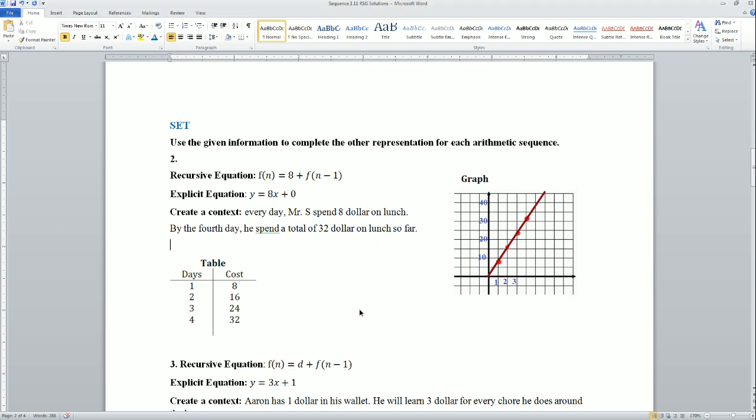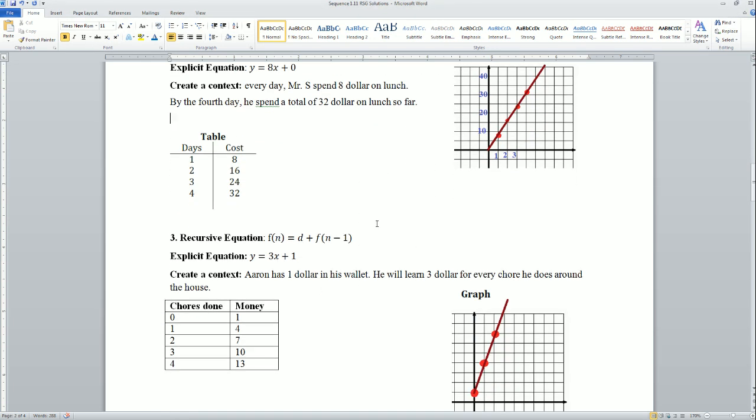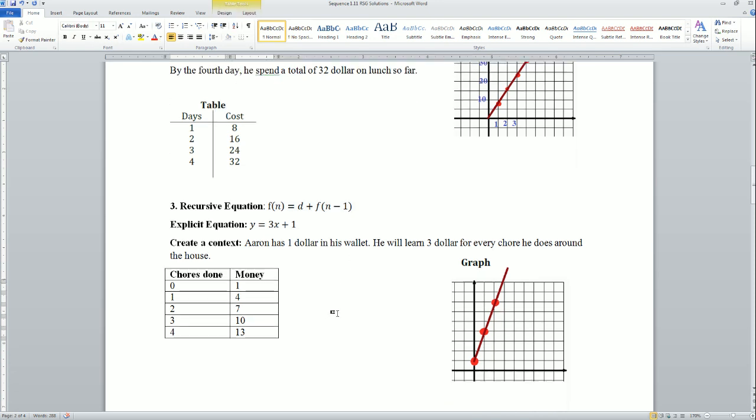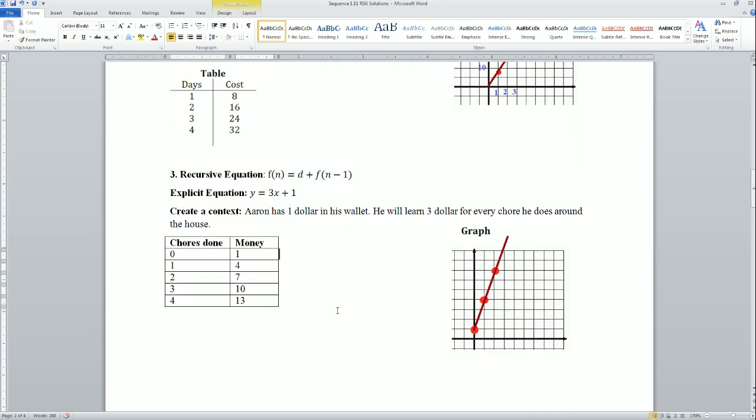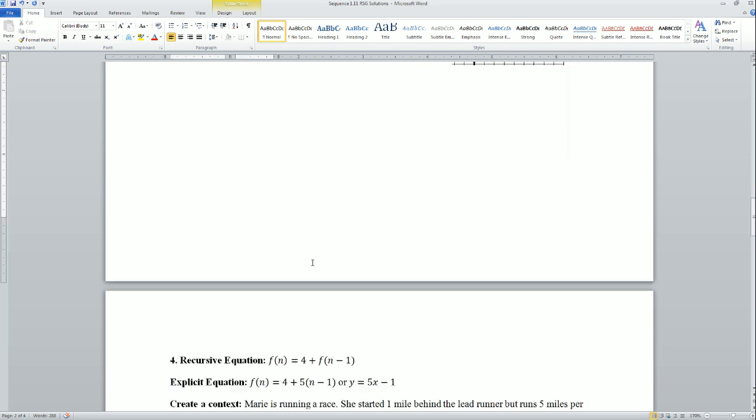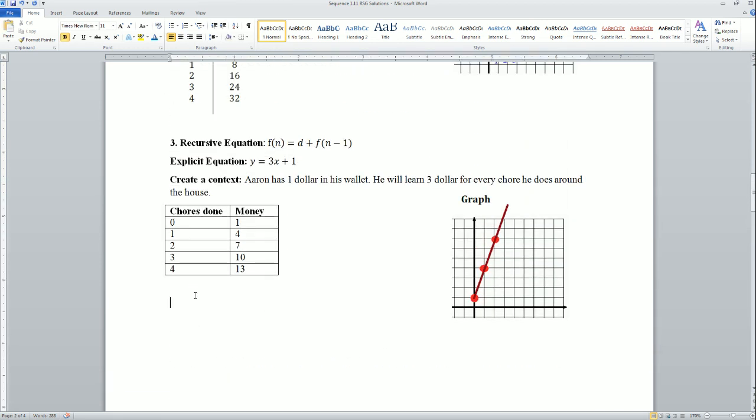The next one, number three, asks us the same thing—it's asking for both the recursive and explicit. It gives us the recursive and the explicit, and it asks us to give the table and to write the context. All right, so I have the equation, so I have to fill in the chart, so I plug in values into here.